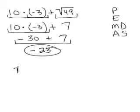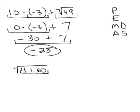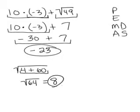Let's try another one. Let's do the square root of 4 plus 60. What do I do here? I don't have parentheses, but I can't do the square root because there's addition going on underneath the radical sign. So you think of anything going on underneath the square root sign as a set of parentheses — that means I need to do this addition first. 4 plus 60 is 64, and then the square root of 64 is 8 because 8 times 8 is 64. So there's my answer.